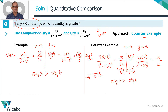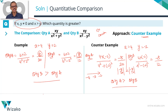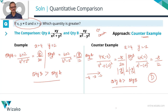With the first example, we got Quantity B greater than Quantity A. With this counter-example, we get Quantity A greater than Quantity B. Since these two expressions behave differently depending on the values chosen, we cannot reach a conclusive comparison. The answer is Choice D.